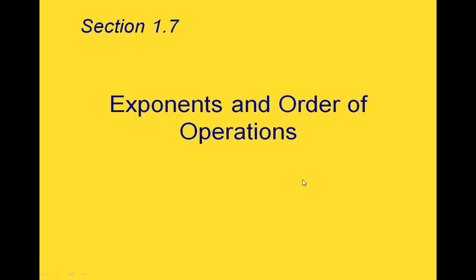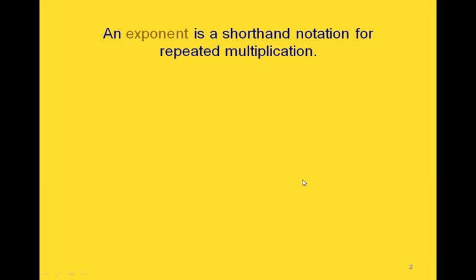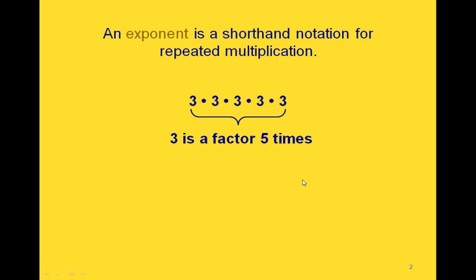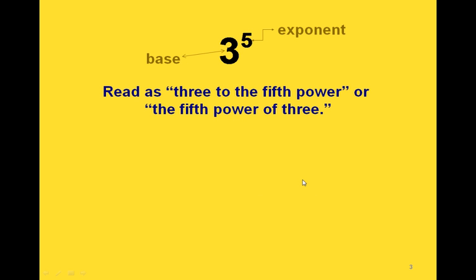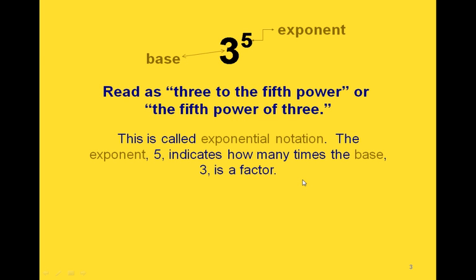This is section 1.7: exponents and order of operations. An exponent is just a shorthand notation for repeated multiplication. If we have five threes multiplied together, that means three is a factor five times. We could write this as three with an exponent of five — three is the base and five is the exponent. We read this as 'three to the fifth power' or 'the fifth power of three.' This is called exponential notation. The exponent five tells us how many times the base, three, is a factor.